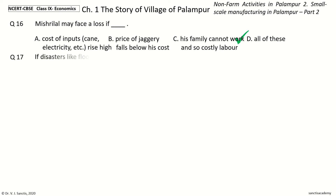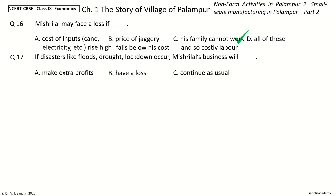Question 17: If disasters like floods, drought, or lockdown occur, Mishrilal's business will dash. Options: Make extra profits, Have a loss, Continue as usual, Have no profit no loss. The answer is Have a loss. So if disasters like floods, drought, or lockdown occur, Mishrilal's business will have a loss.